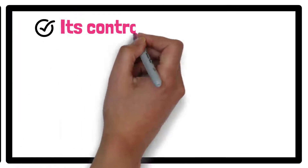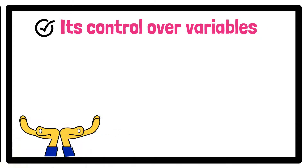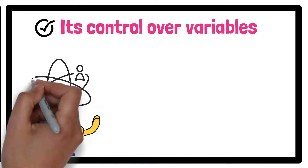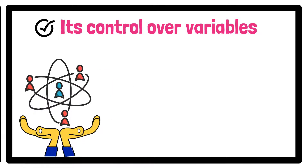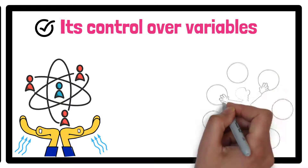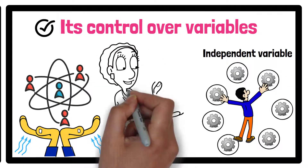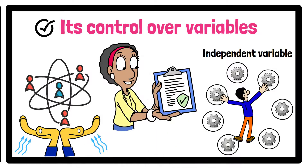Another strength is its control over variables. In experimental research, researchers can carefully control the conditions under which the study takes place, reducing the influence of external factors. This high level of control makes it easier to isolate the effects of the independent variable, leading to more accurate and reliable results.